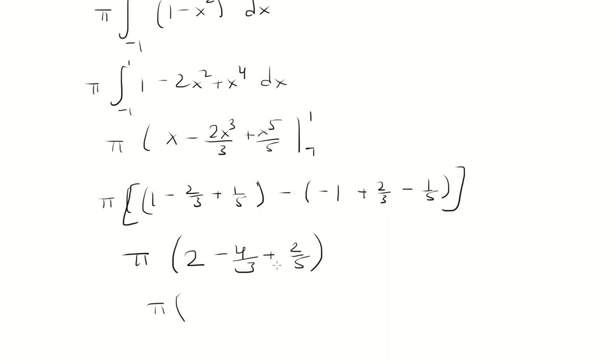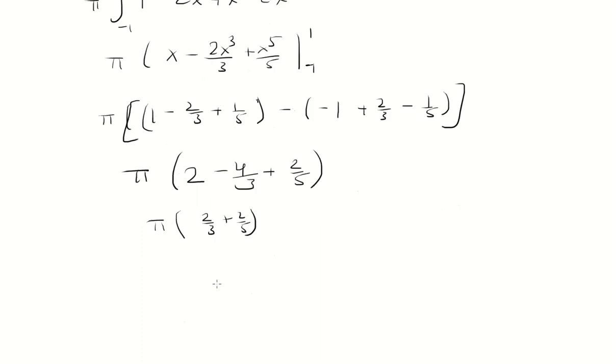So you have 2 minus 4 thirds is 2 thirds. And then we're going to add 2 fifths to that. So this is 16 over 15 pi. So that's the volume.